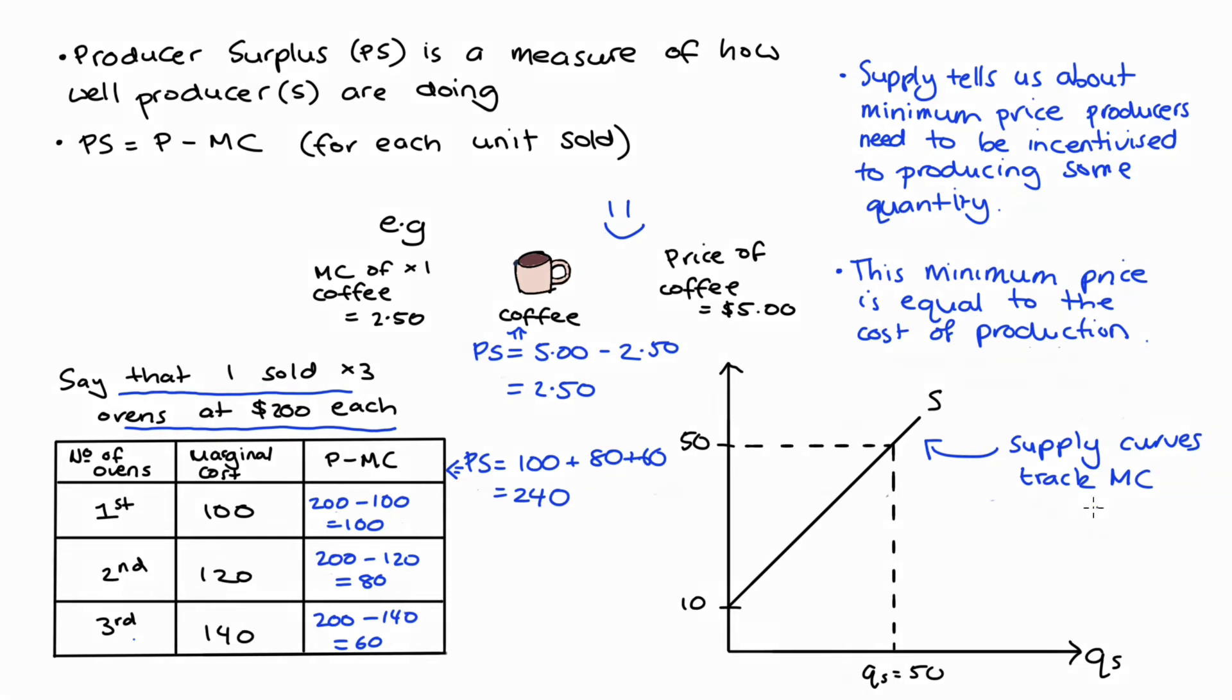So for instance if we had any quantity say Q1, the marginal cost of producing Q1 would just be equal to the height of the supply curve at that quantity. Now if we sold this quantity for say $50 as in this example, then price minus marginal cost which is what we need for producer surplus is just the difference between the price line and the height of that supply curve.